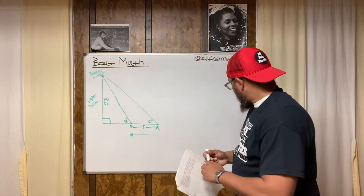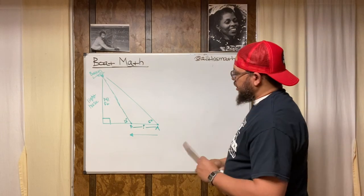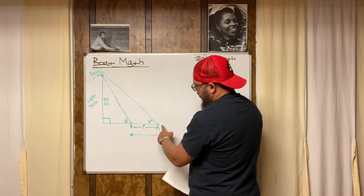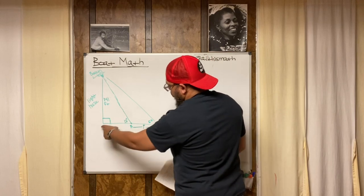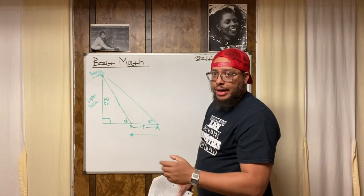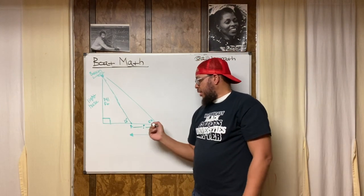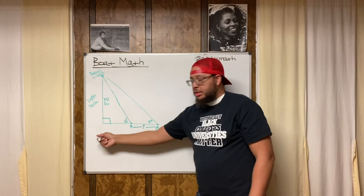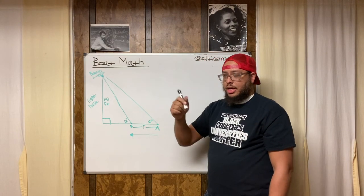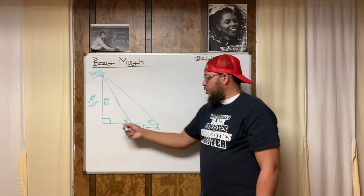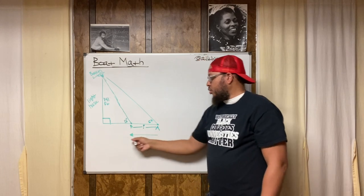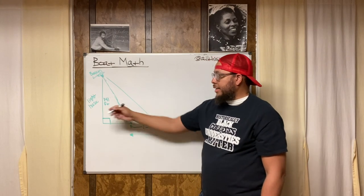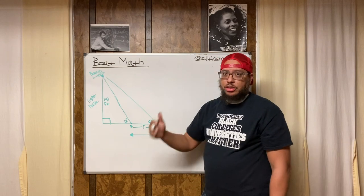Here's the strategy: if I know the total distance from the shoreline to point A, and also the distance from the shoreline to point B, I can subtract the shorter distance from the total and that leaves me with the distance from A to B. So I want to figure out both of those distances using trigonometry — an invaluable tool.